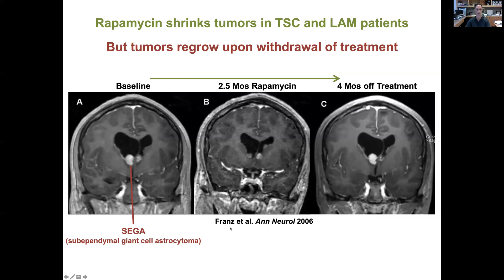Here is another example from a paper by David Franz and colleagues from 2006, looking at SEGAs in a TSC patient. If you treat the patient with rapamycin, the tumor has a remarkable response and shrinks. However, if you stop the treatment, the tumor comes back to its original size — occurring after just about four months. So again, rapalogs are highly effective at controlling tumors in tuberous sclerosis, but are also rapidly reversible if you come off treatment.